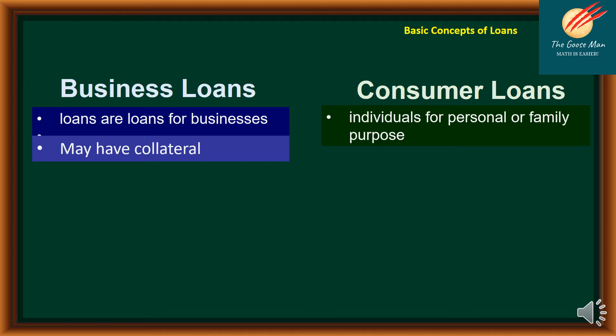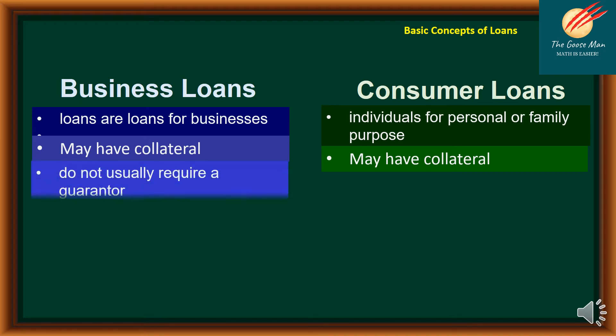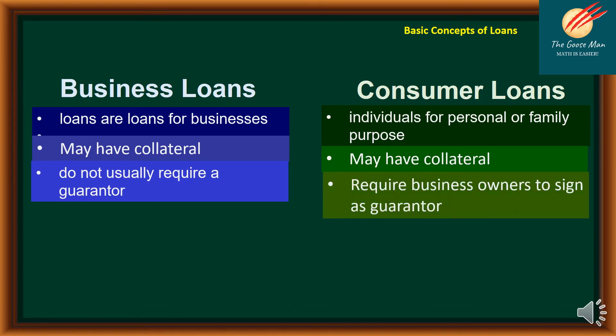For business loans, you may have collateral. For consumer loans, sometimes you may have collateral, but sometimes it is not actually required. For business loans, we do not usually require a guarantor. However, for consumer loans, it requires business owners to sign as guarantor.